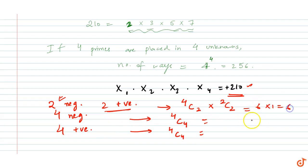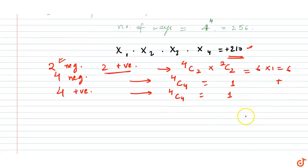So 4C2 is 6, 2C2 is 1, so 6 × 1 is 6. This is 1. So the total number of cases are, if you add them up, so you get 6 + 1 + 1, you get total 8 cases.